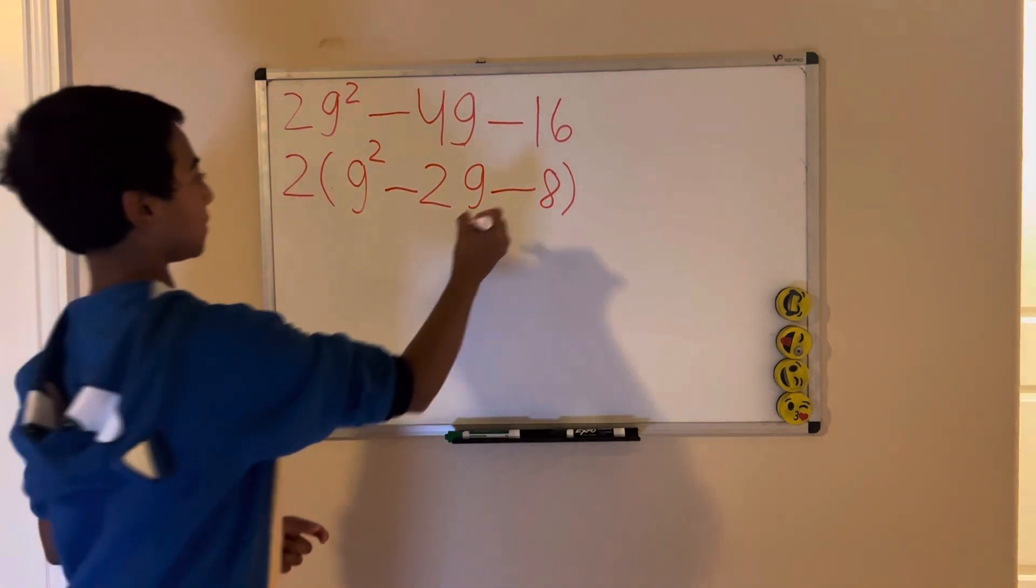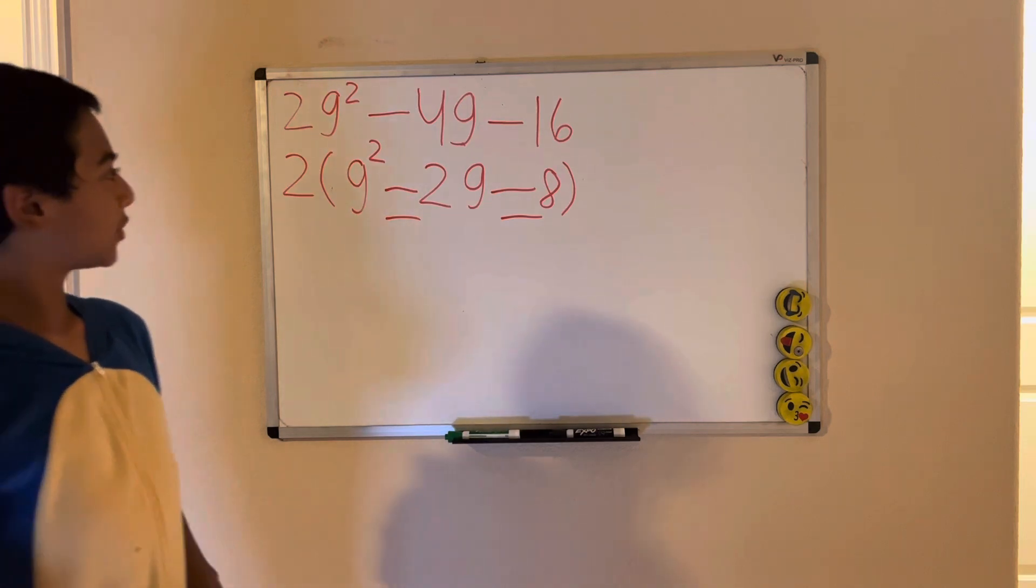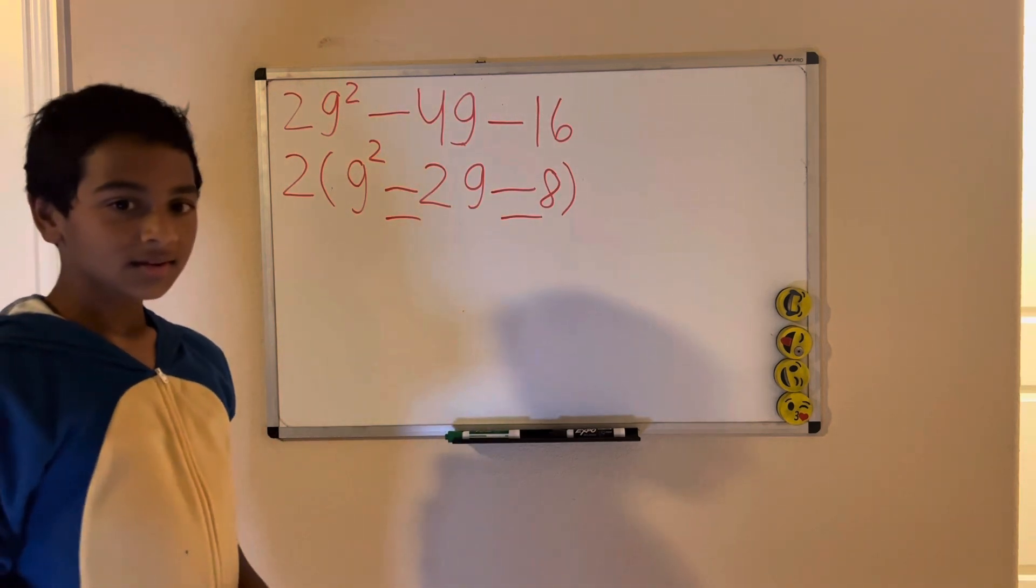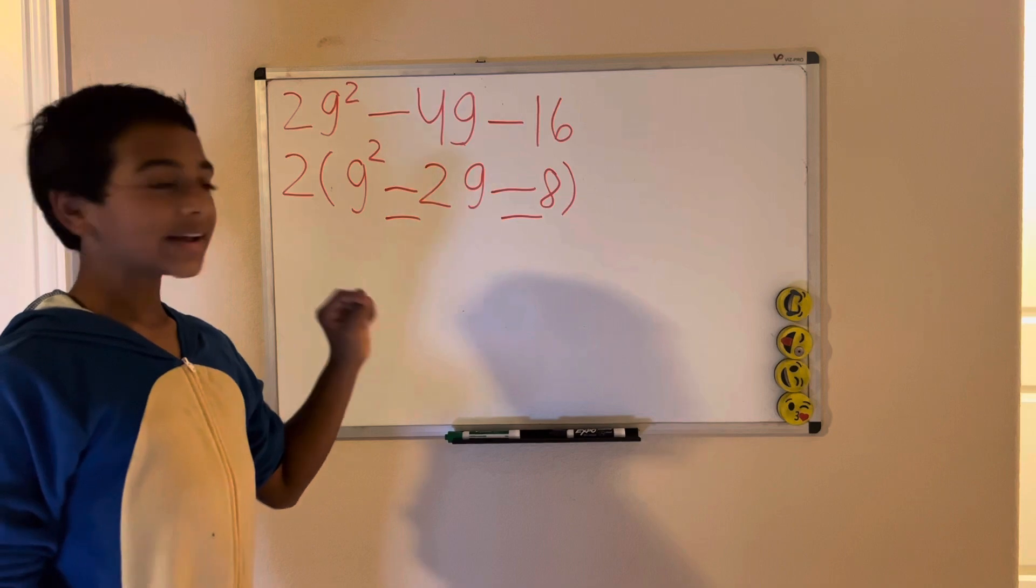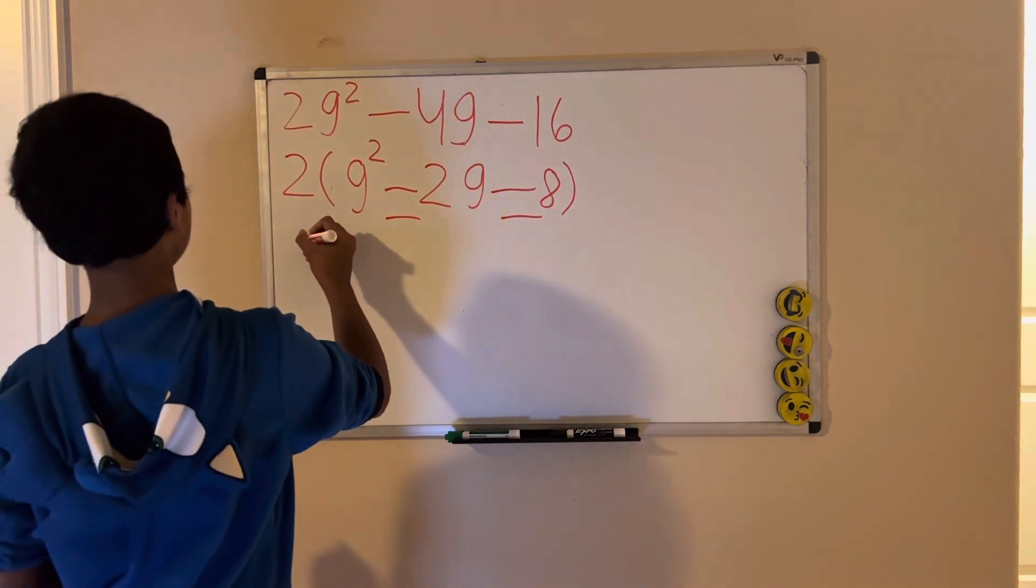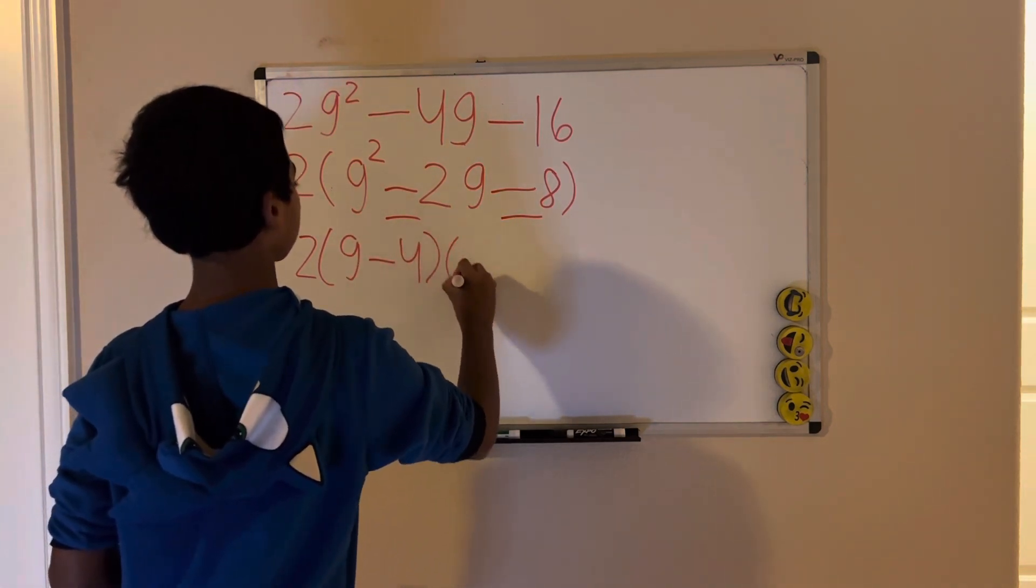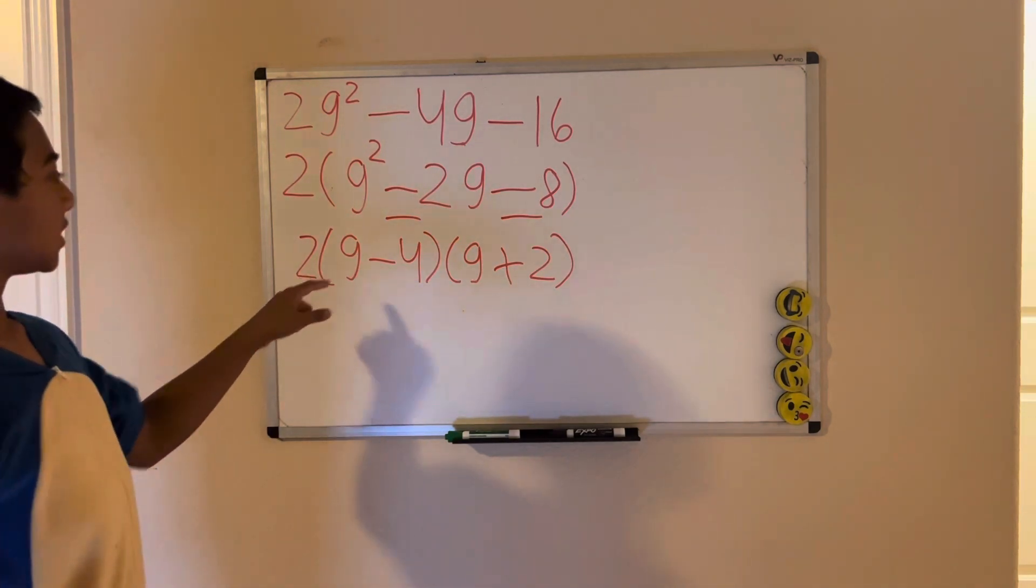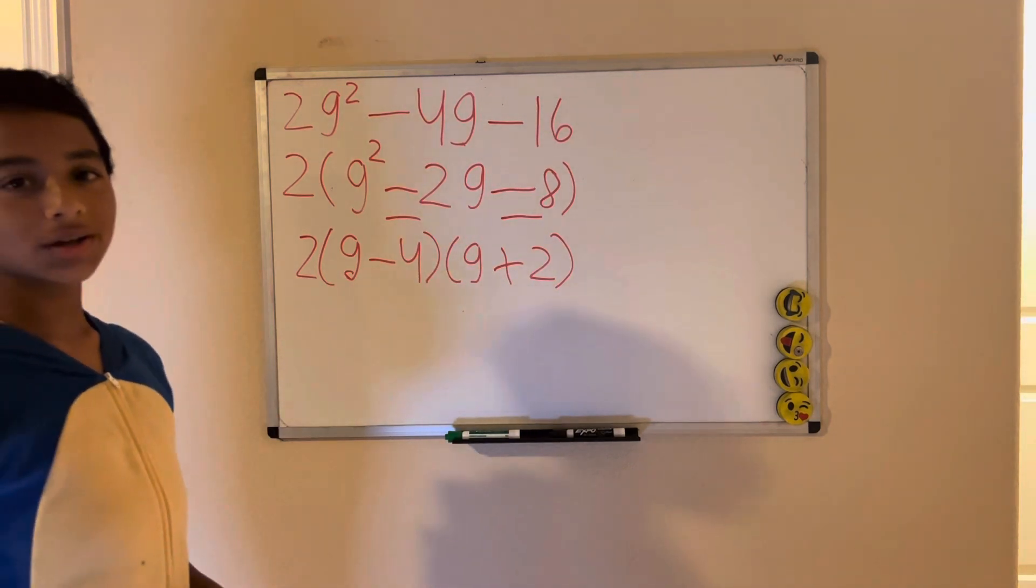What two numbers multiply to give negative 8 but add to give negative 2? Let's think about this. We have 4 and 2, but we will use negative 4 and 2, because negative 4 times 2 is negative 8, and negative 4 plus 2 is negative 2. So it's going to be 2 times g minus 4 times g plus 2. So, 2 times g minus 4 times g plus 2 is our solution in the final example.